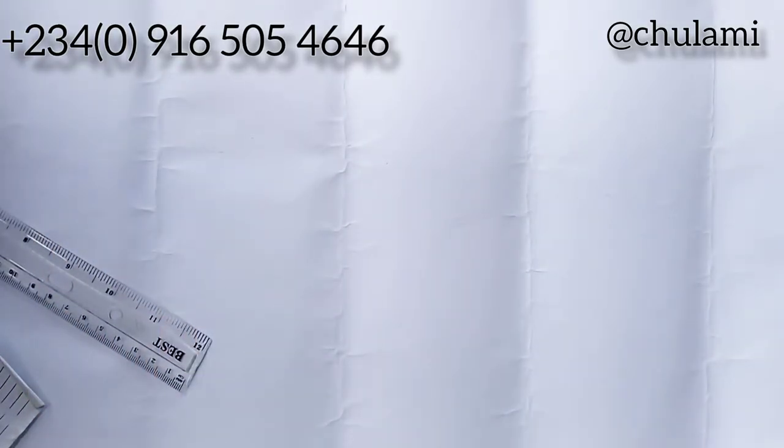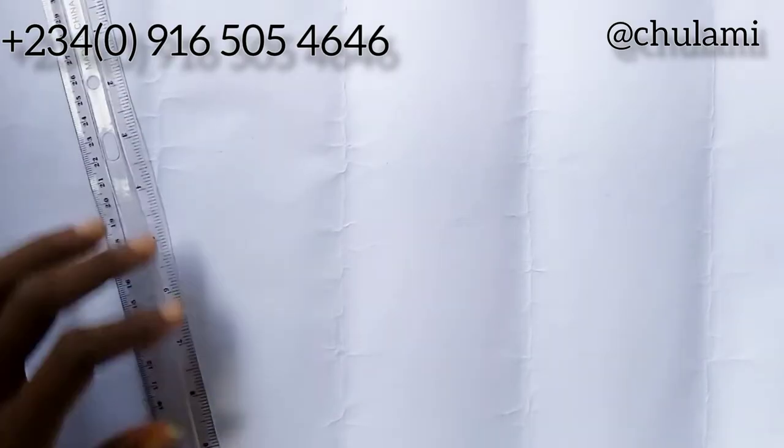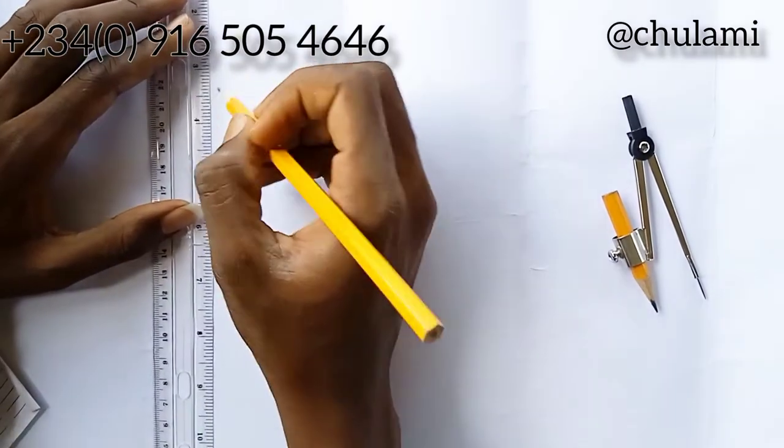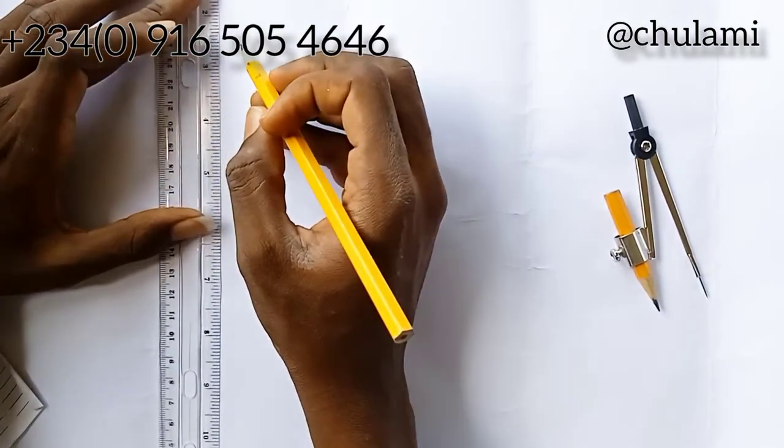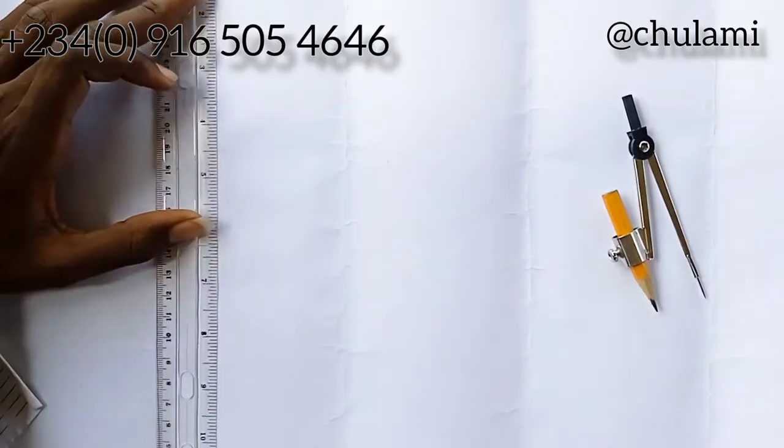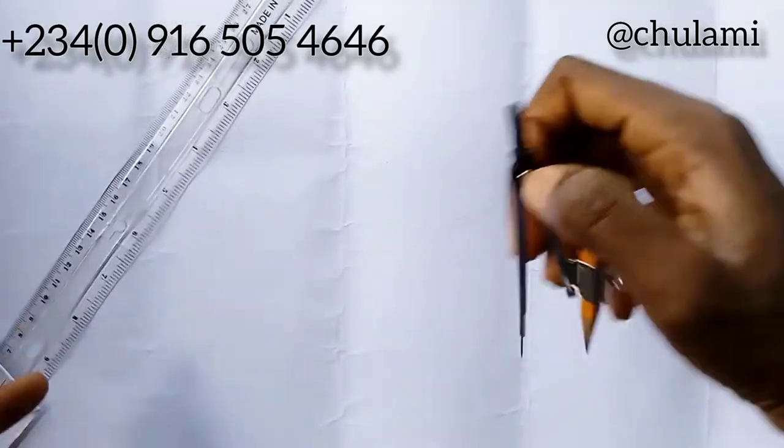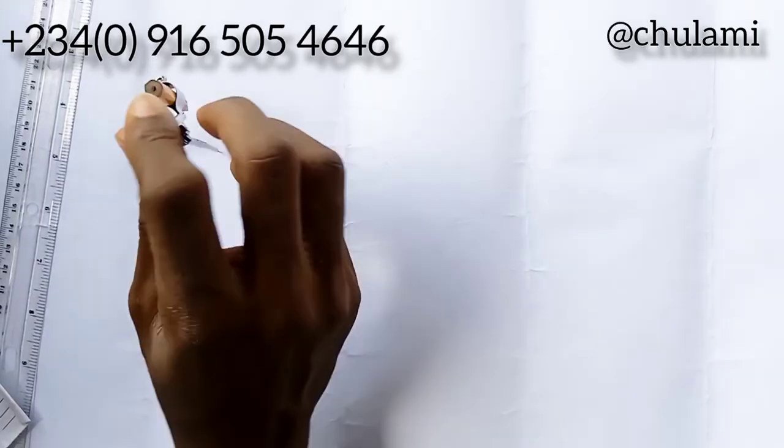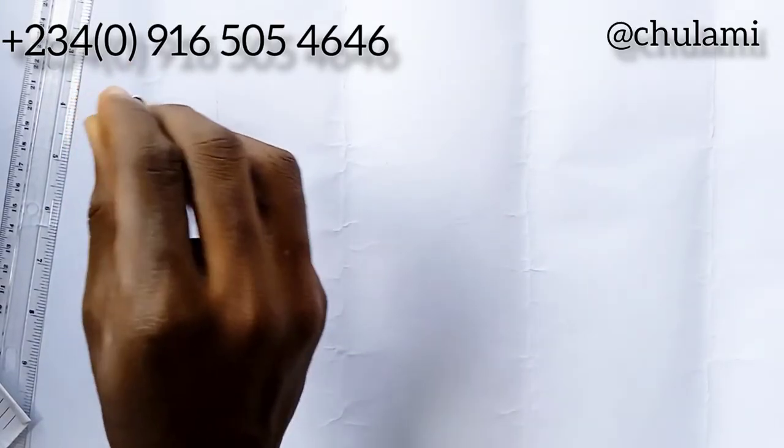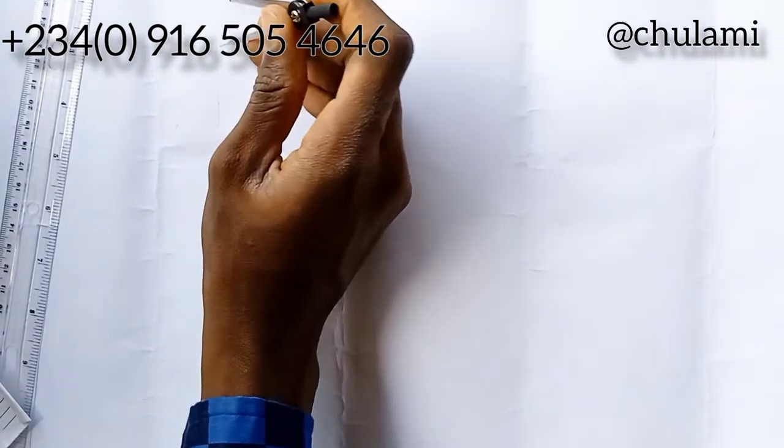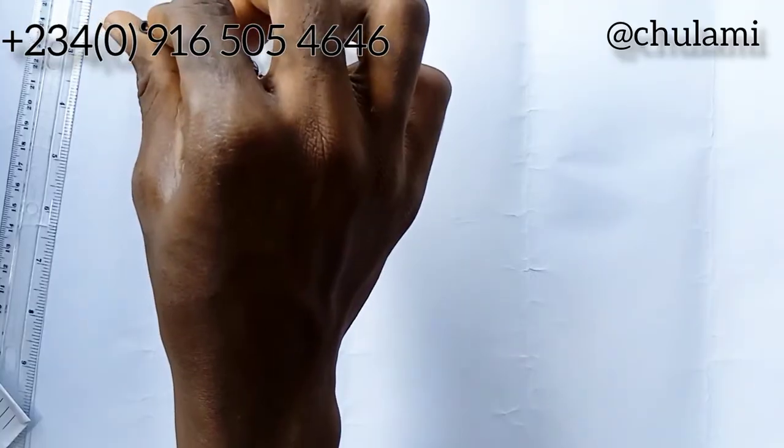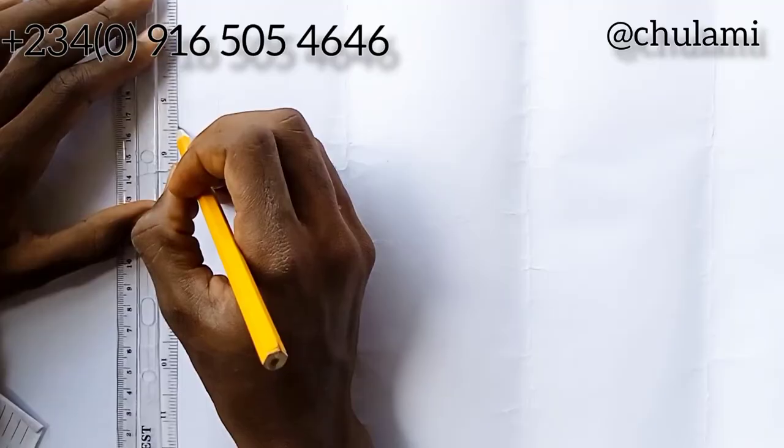I'll construct a hexagon on this circle. I'll draw a straight line, mark the midpoint, then draw a straight line. I'll place my compass here, cut up, cut down, press it here too, cut up, cut down. I believe we should know how to draw a hexagon.